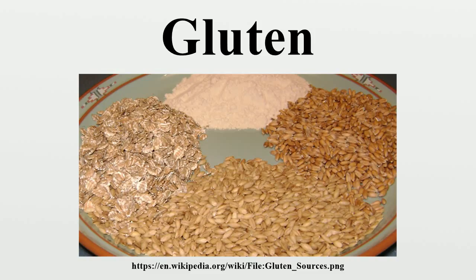Celiac disease with classic symptoms — which include gastrointestinal manifestations such as chronic diarrhea and abdominal distension, malabsorption, loss of appetite, and impaired growth — is currently the least common presentation form and affects predominantly small children generally younger than 2 years of age. Celiac disease with non-classic symptoms is the most common clinical type and occurs in older children, adolescents, and adults, characterized by milder or even absent gastrointestinal symptoms and a wide spectrum of non-intestinal manifestations.